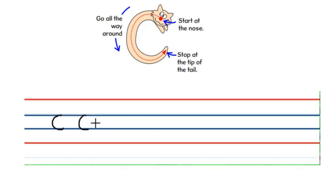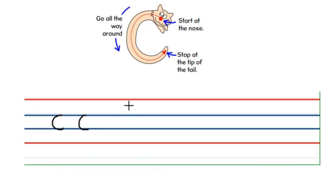Now how will we write the big C or the capital C? The big C starts from the skyline and ends at the grass line. In English language, all the letters sit on the grass line — both capital and little letters. The capital C is the same shape as the small C, like a cat sleeping. Start from the nose at the skyline, go round and touch the grass line. You have written the letter C.